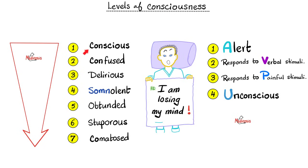Levels of consciousness: the best is normal — you should be conscious. Then it gets progressively worse: confused, delirium, somnolence, obtunded, stupor, and then comatose. What was the name of the philosopher who said he was awakened from his dogmatic slumber by David Hume? If you know, comment below; if not, ask your professor.